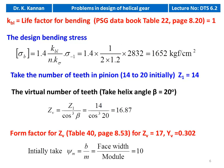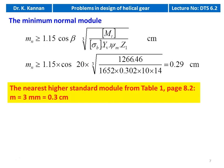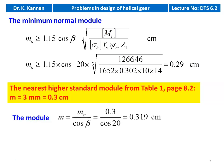We calculate the minimum normal module for the helical gear: mn ≥ 1.15 × cosβ × ∛[Mt / (σB × Yv × ψm × Z1)]. Substituting numeric values: mn ≥ 1.15 × cos20° × ∛[1266.46 / (1652 × 0.302 × 10 × 14)] = 0.29 cm. The nearest higher standard module from table 1 is 3 mm (0.3 cm).